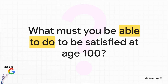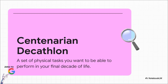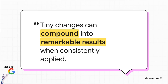To make that shift, longevity expert Dr. Peter Attia suggests asking a powerful question: forget short-term goals and think way ahead — what do you need to be physically able to do to be truly satisfied with your life when you're 100? This is what Dr. Attia calls the centenarian decathlon. It's super personal: maybe it's lifting your carry-on into the overhead bin, walking up a few flights of stairs, or getting down on the floor to play with your grandkids. That long-term vision is a motivator far more powerful than any short-term goal. As behavioral scientists like James Clear have shown, tiny changes applied consistently lead to the most remarkable results.